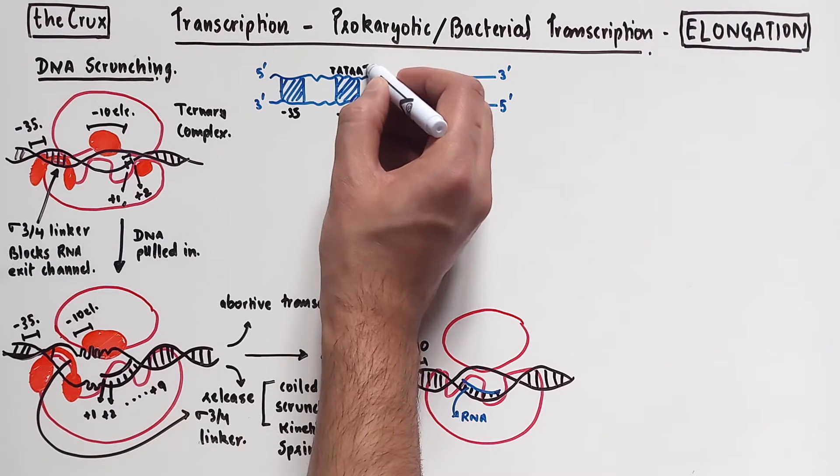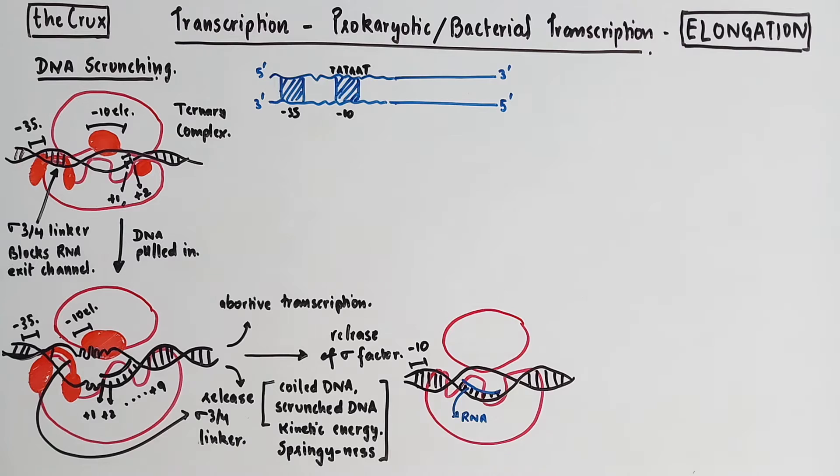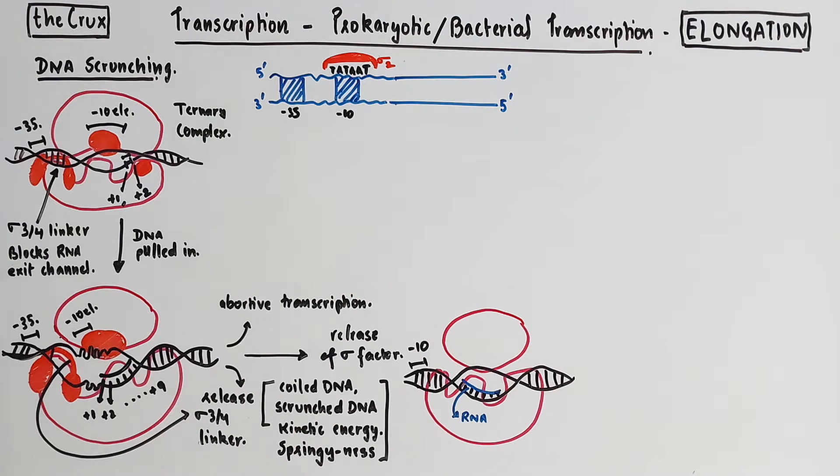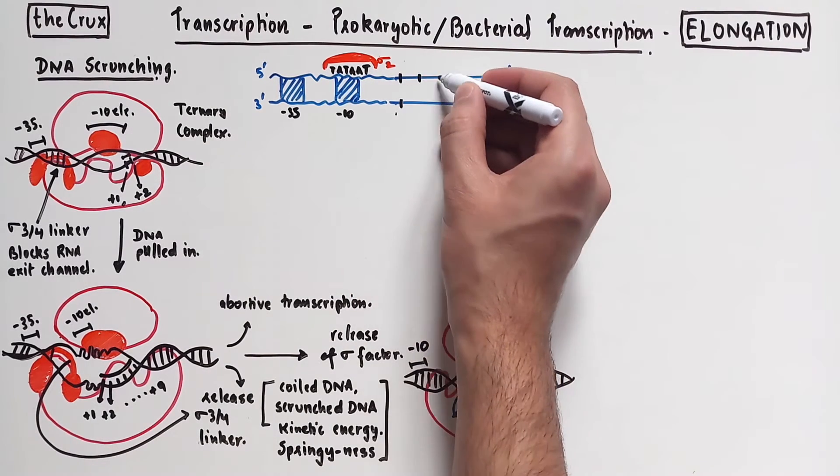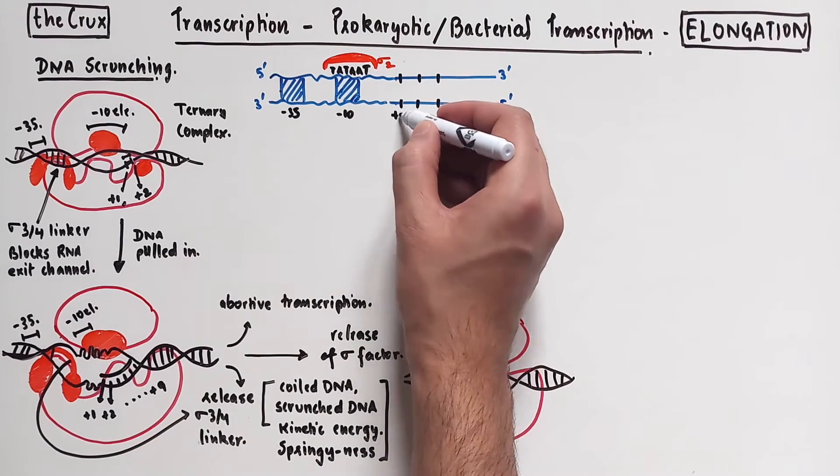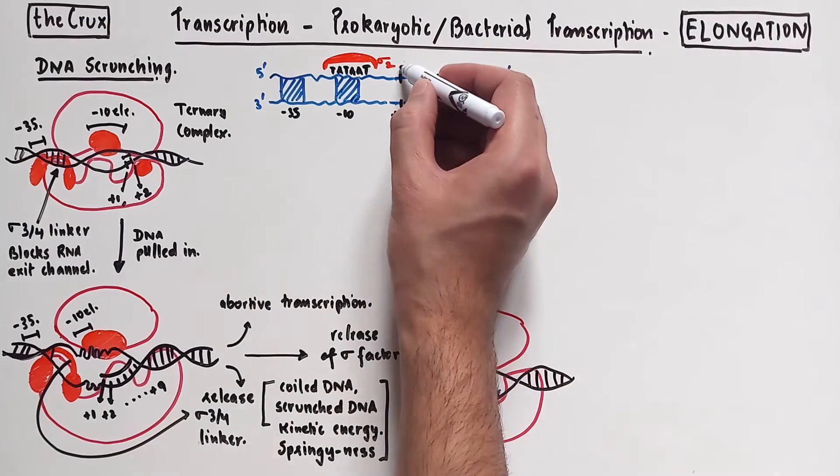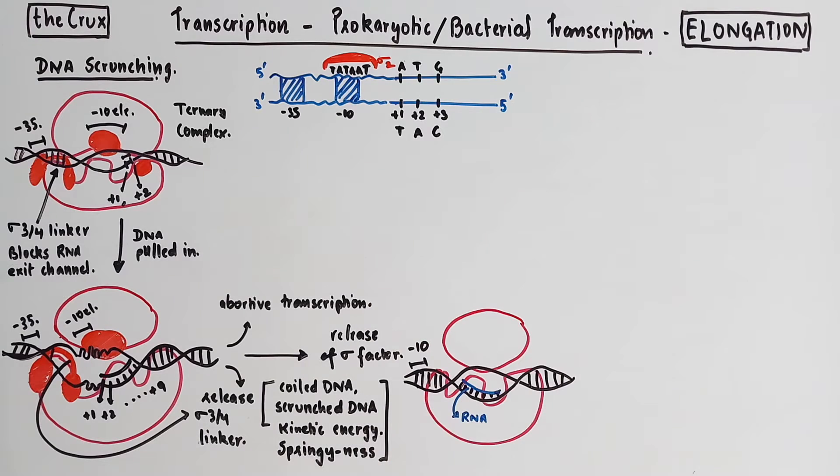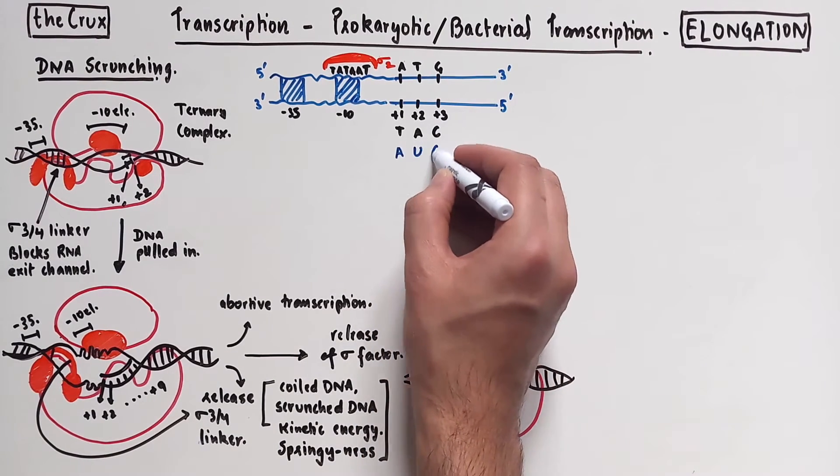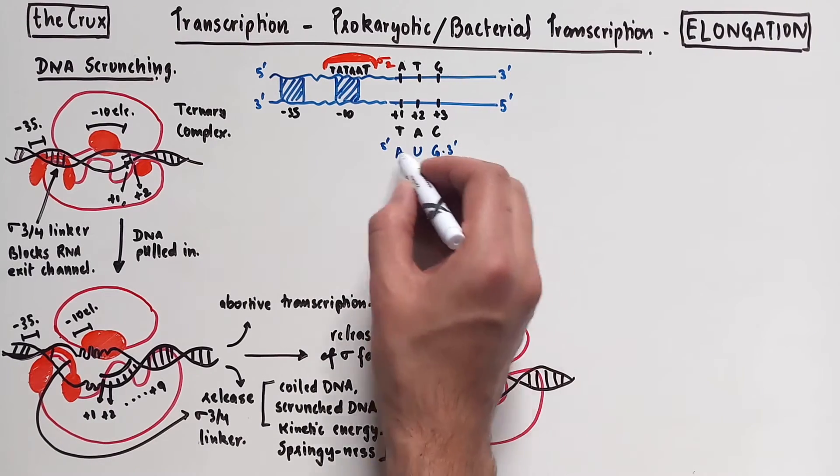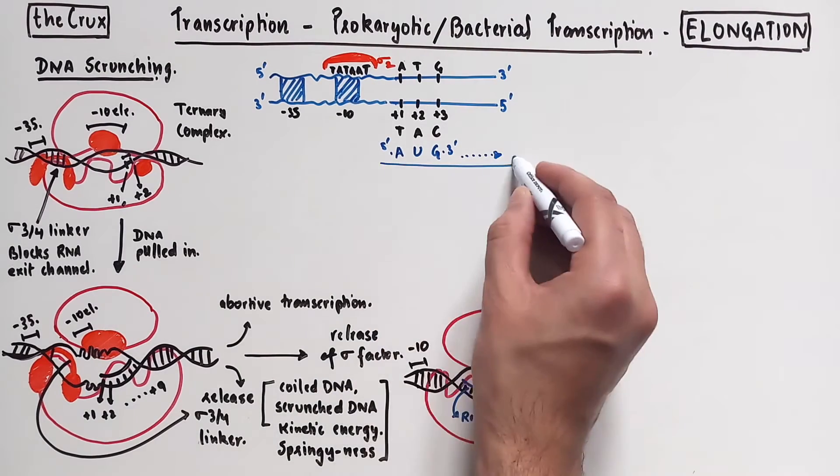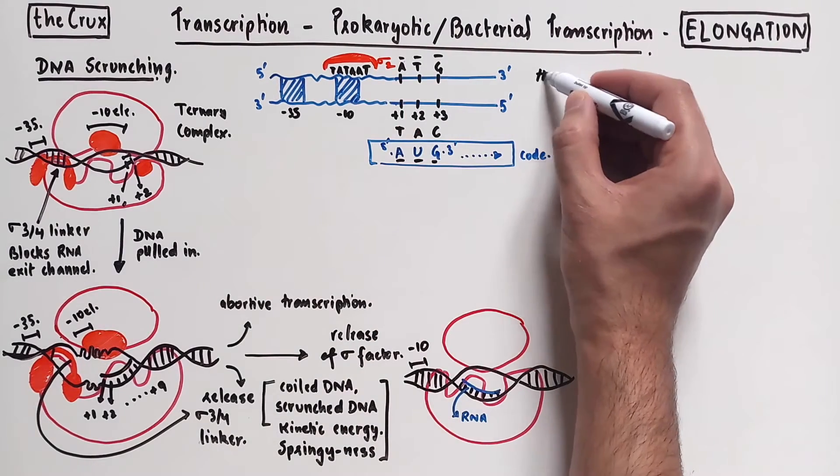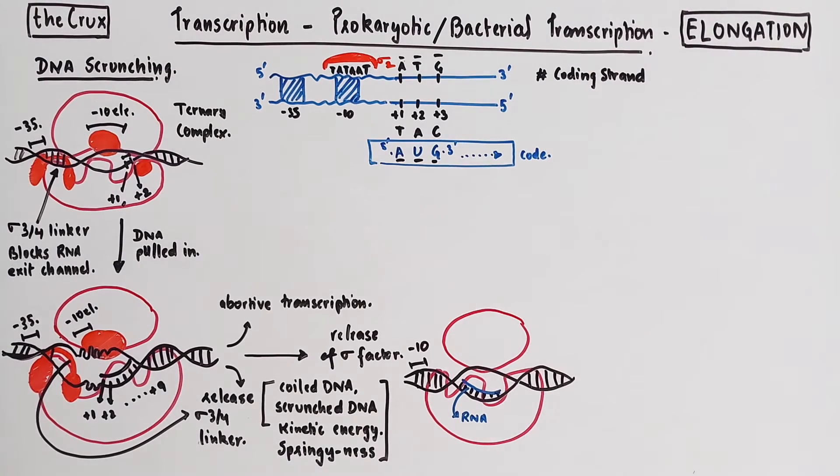In our piece of DNA, we have the two common promoters, the negative 35 and the negative 10 element. If we focus on the negative 10 element, which has the consensus TAT-AAT, we see that sigma factor recognizes this sequence at the 5' to 3' strand and not the bottom one. Downstream of the promoter DNA, we have the plus 1, plus 2, and plus 3 sites. If we have ATG on the 5' to 3' strand, the RNA produced will have AUG and so on. This code looks exactly like the 5' to 3' strand, so we call this strand the coding strand or the strand that makes sense.